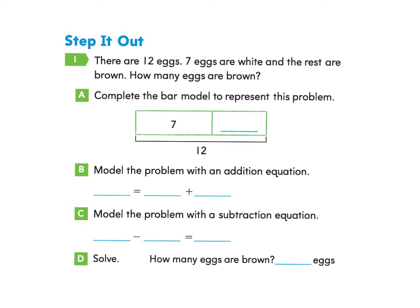Let's look at page 334, under Step It Out, part one. There are 12 eggs. Seven eggs are white and the rest are brown. How many eggs are brown? Part A: complete the bar model to represent this problem. We know the total is 12 eggs, and seven of the eggs are white, so we're looking for the amount that are brown. We count on from seven to 12 — eight, nine, ten, eleven, twelve — that is a difference of five. So I write five here, and seven and five make 12.